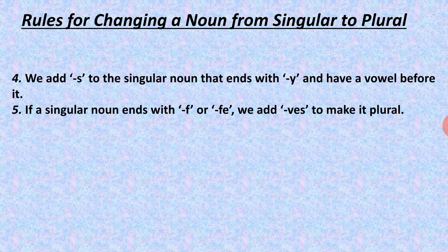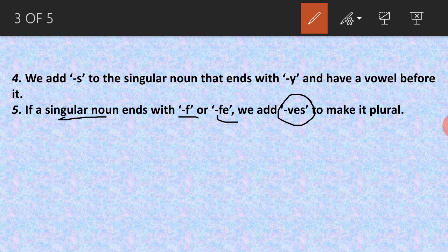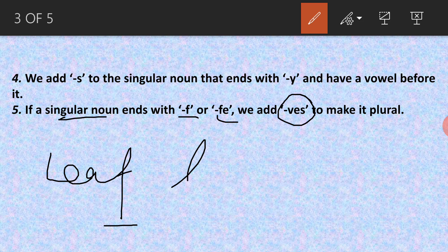The next rule: if a singular noun ends with 'f' or 'fe', we add 'ves' to make it plural. If 'f' or 'fe' is coming at the end of any singular noun, we change it to 'ves'. For example, 'leaf' — 'f' is coming at the end, so it becomes 'l-e-a-v-e-s', that is 'leaves'.